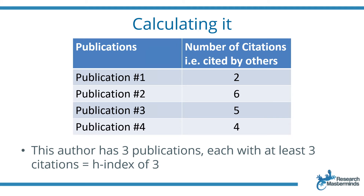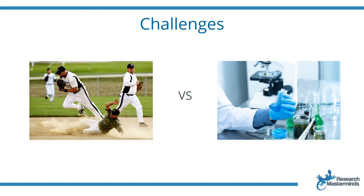Here's another example. This author also has four publications: the first with two citations, the second with six, the third with five, and the fourth with four citations. This means that this author has three publications each with at least three citations, which gives this author an H-index of three.